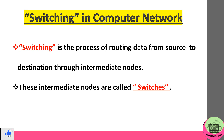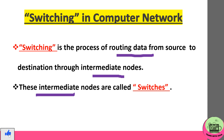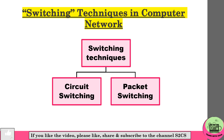So what is switching in computer network? It is basically the process of routing data from source to destination through intermediate nodes. These intermediate nodes through which this data has been routed are known as switches. There are two types of switching techniques we are going to learn today: circuit switching and packet switching.